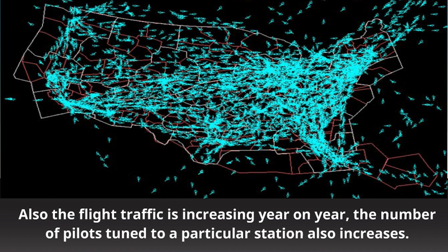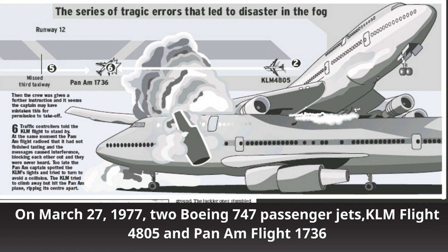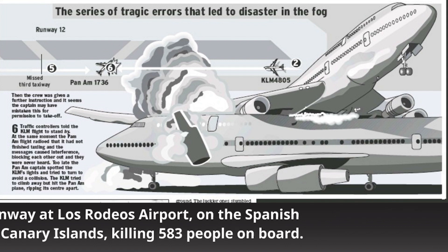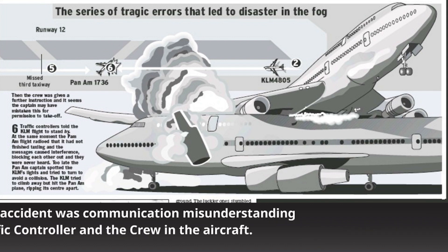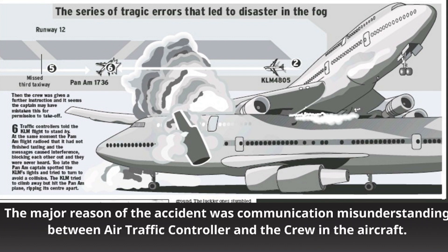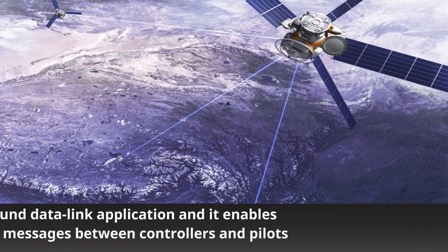On March 27th, 1977, two Boeing 747 passenger jets — KLM flight 4805 and Pan Am flight 1736 — collided on the runway at Los Rodeos Airport on the Spanish island of Tenerife, Canary Islands, killing 583 people on board. The major reason for the accident was a communication misunderstanding between the air traffic controller and the crew in the aircraft. Controller-pilot data link communication, also called CPDLC, was introduced to overcome this problem.